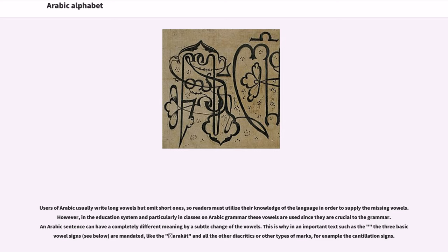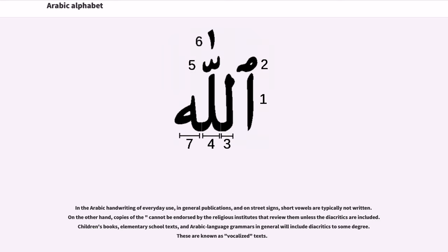This is why in important texts such as the Quran, the three basic vowel signs are mandated, along with the harakat and all other diacritics. In Arabic handwriting of everyday use, in general publications and on street signs, short vowels are typically not written. Copies of the Quran cannot be endorsed by religious institutes unless diacritics are included. Children's books, elementary school texts, and Arabic language grammars will include diacritics to some degree; these are known as vocalized texts.